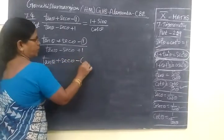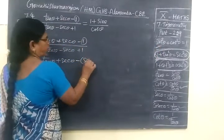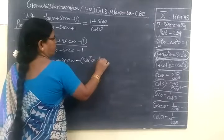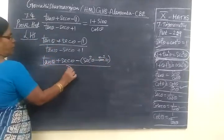1 is written as 1. Tan θ + sec θ. How to raise to the power? Tan θ - sec θ by denominator.